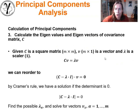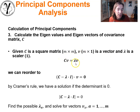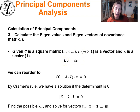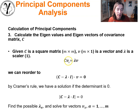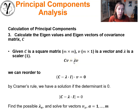An eigenvector is a vector whose direction remains unchanged when a linear transform is applied to it. We use the relationship where C is our covariance matrix, and we solve for the eigenvectors v and eigenvalues lambda. We can solve for all possible eigenvalues and eigenvectors, and there will be m of them available to us.